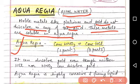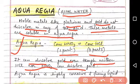Now this, it can dissolve gold, even though neither HCl nor HNO3 can dissolve gold. So gold or silver can be dissolved in aqua regia. Aqua regia is highly corrosive and fuming liquid.